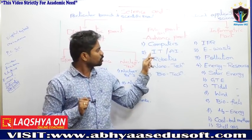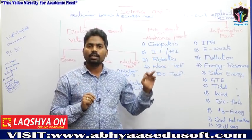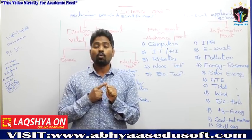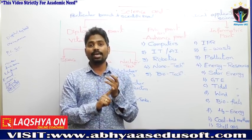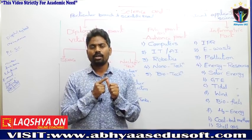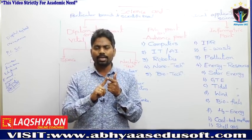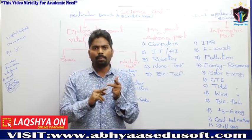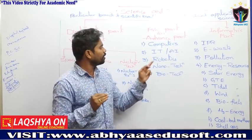Next is IT — Information Technology. In this section we'll cover what is the internet, social media like WhatsApp, Facebook, Twitter, and email, as well as memory units: kilobyte (KB), megabyte (MB), gigabyte, and terabyte.